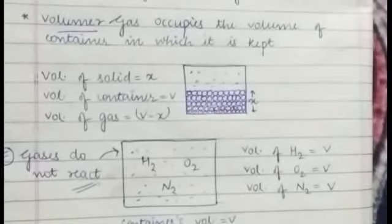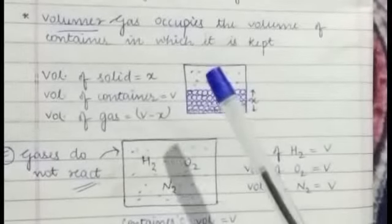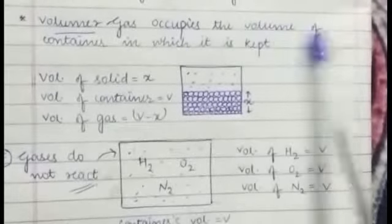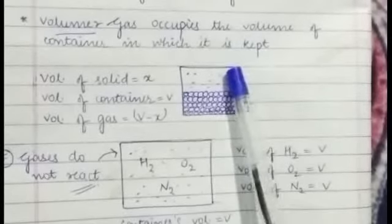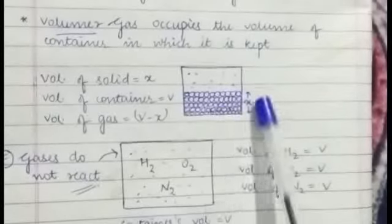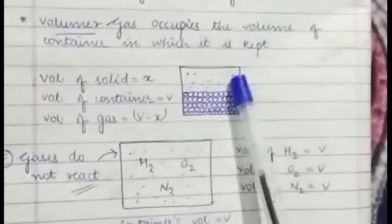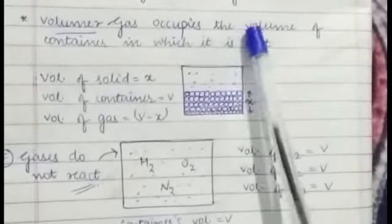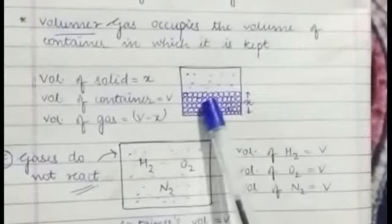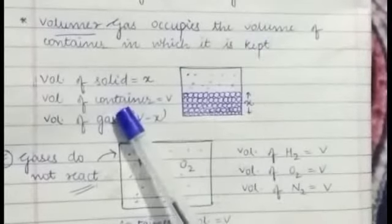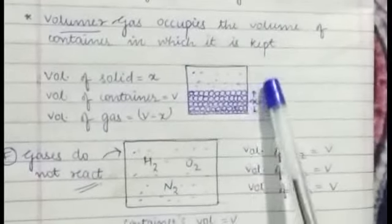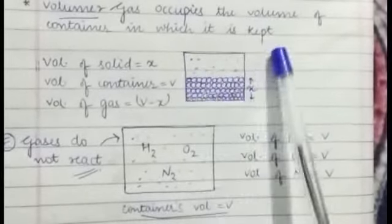Secondly we have volume as a measurable property. So gas occupies the volume of a container in which it is kept. So the gas which is kept in the container gives the volume of the container. So if the volume of the container is V then the gas volume is V.